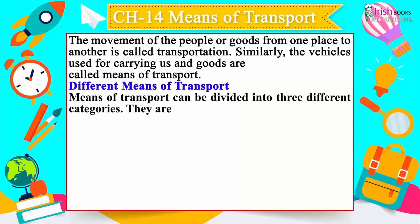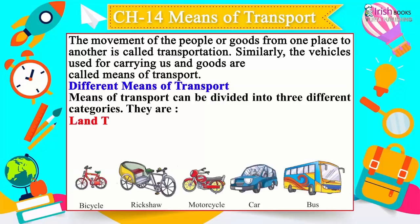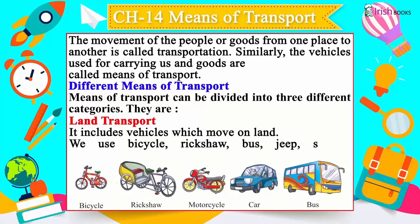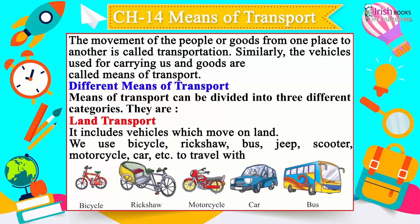Means of transport can be divided into three different categories. The first is land transport, which includes vehicles that move on land. We use bicycle, rickshaw, bus, jeep, scooter, motorcycle, car, etc. to travel within a city.